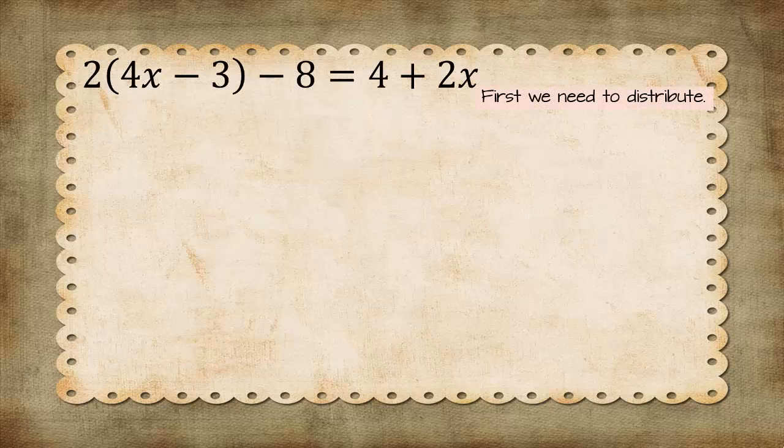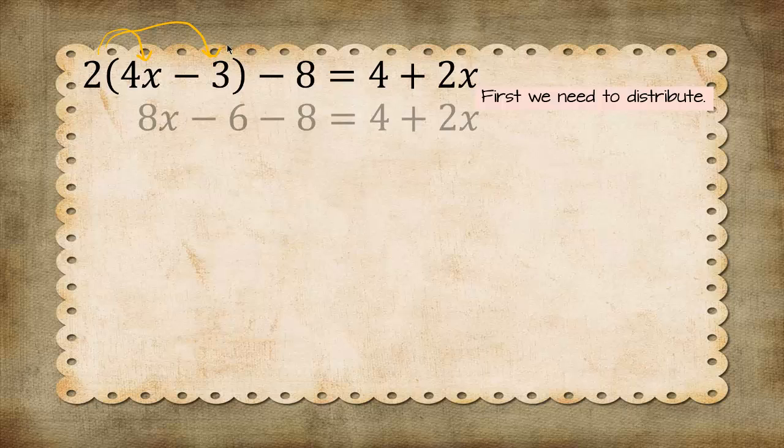The first thing that we need to do is distribute. So we're going to take 2 times 4x and 2 times negative 3. This gives us 8x minus 6 because 2 times 4x is 8x, and 2 times negative 3 is negative 6. We're going to leave everything else alone.